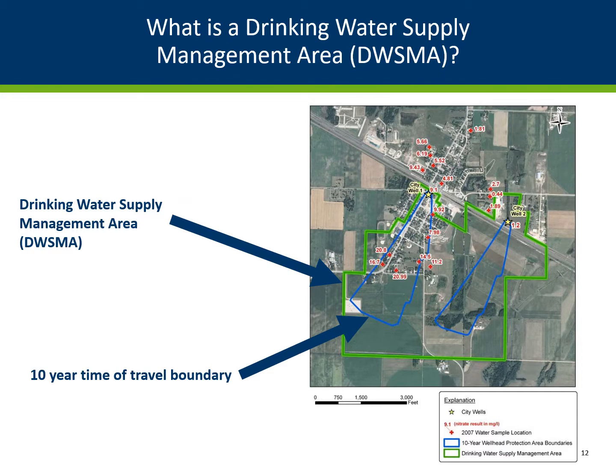What is the drinking water supply management area? The blue line shows the water protection area, which is the source of a city's water. This map shows a 10-year time of travel boundary, meaning it takes about 10 years for the water to get from the edge of the blue line to the public well. The green line shows the drinking water supply management area and lines up with recognizable boundaries such as roads. Nitrate fertilizer application restrictions apply in drinking water supply management areas where municipal public wells have nitrate levels of 5.4 mg per liter or higher. The nitrate data comes from the Minnesota Department of Health.